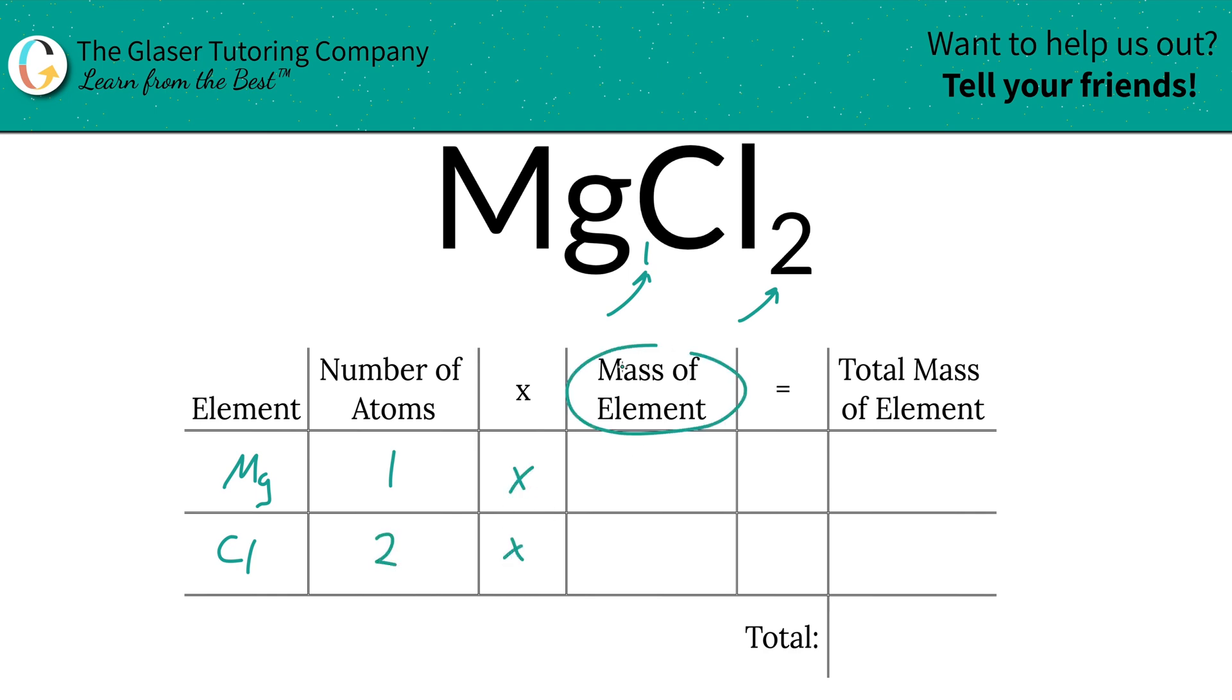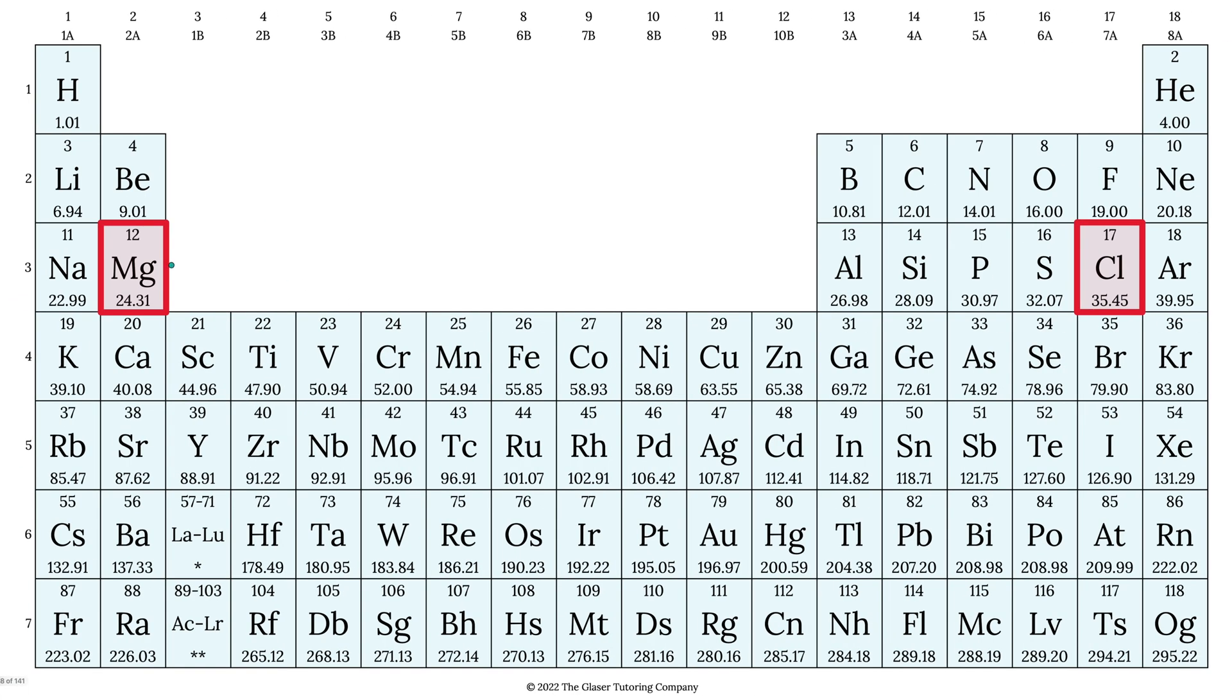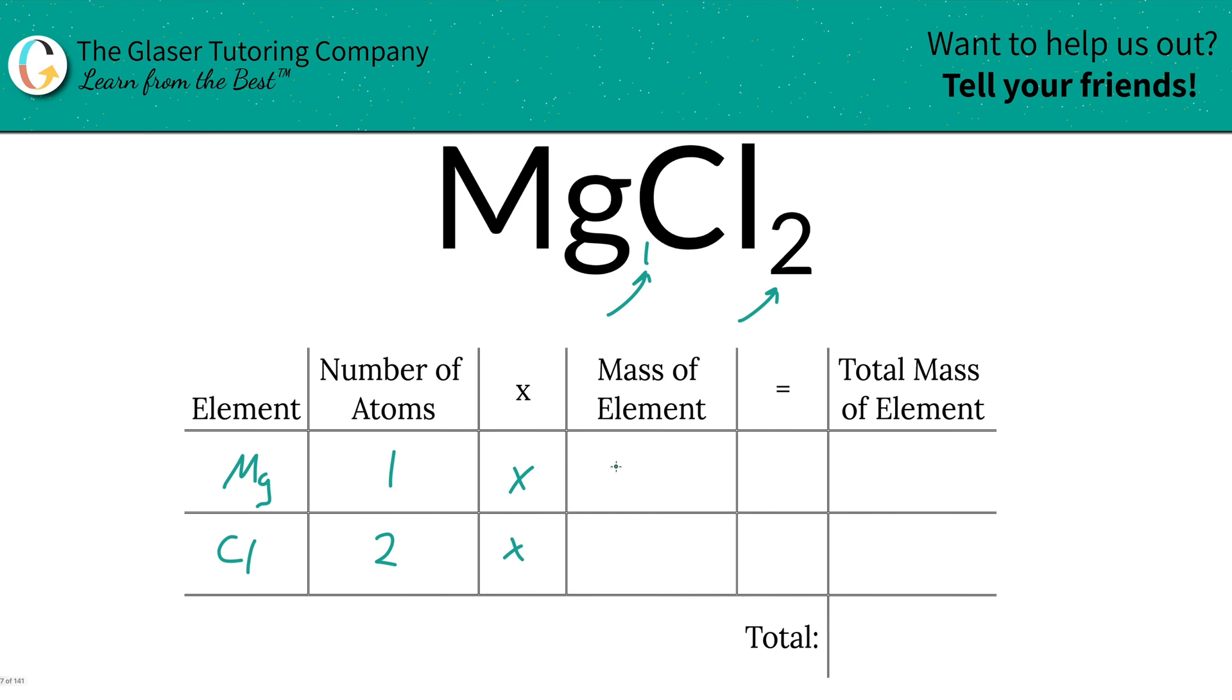Then we're going to multiply each of those number of atoms by the mass of the particular element. That's where the periodic table comes into play. So mass of magnesium is 24.31. Chlorine is going to be 35.45, and that's what we're going to write in.